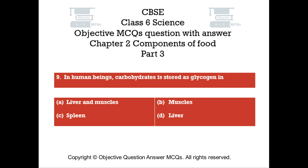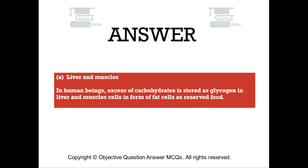Question number 9: In human beings, carbohydrates are stored as glycogen in. Option A: Liver and muscles. Option B: Muscles. Option C: Spleen. Option D: Liver. The right answer is Option A — Liver and muscles. In human beings, excess of carbohydrates is stored as glycogen in liver and muscle cells in the form of fat cells as reserved food.